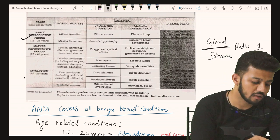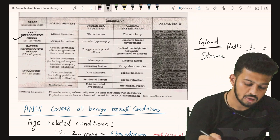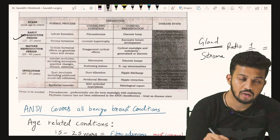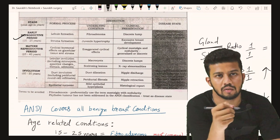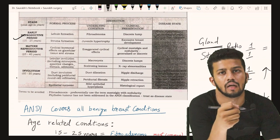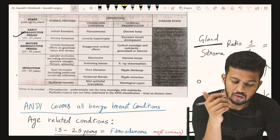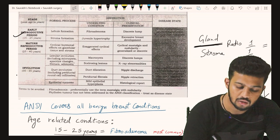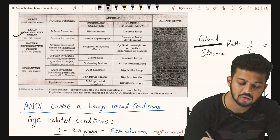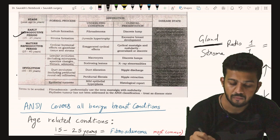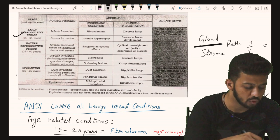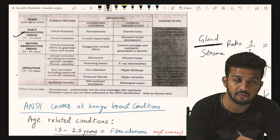In the early reproductive period, the two main components of breast tissue are the gland and the stroma. The ratio of gland to stroma is 1:1 during the early reproductive period.